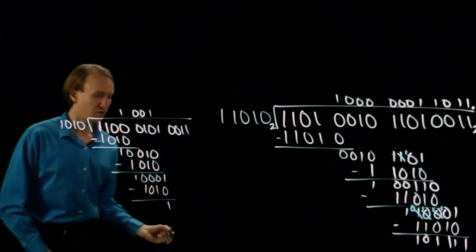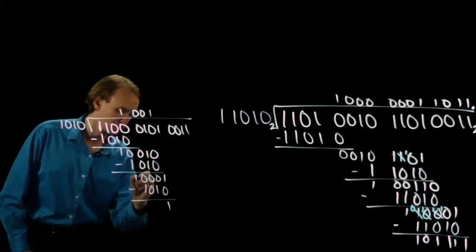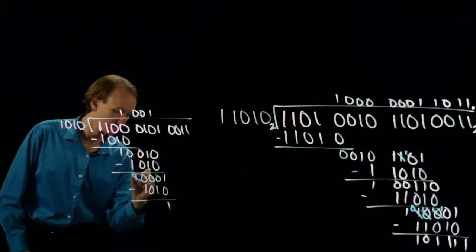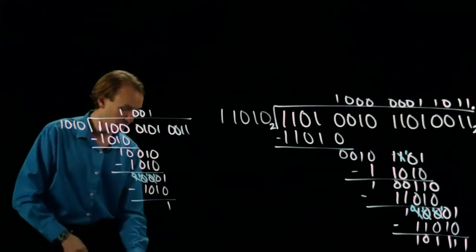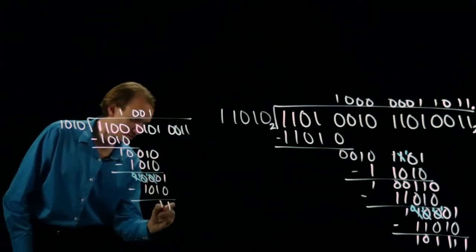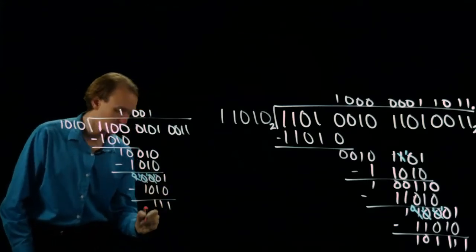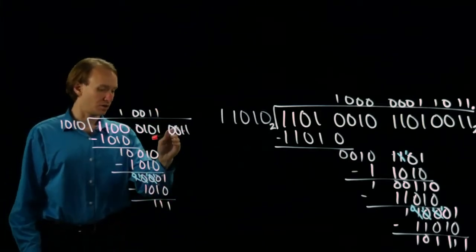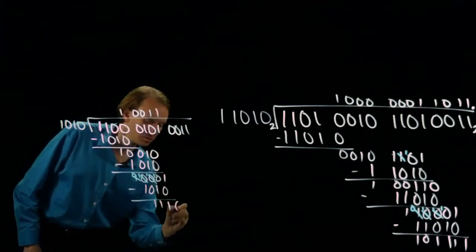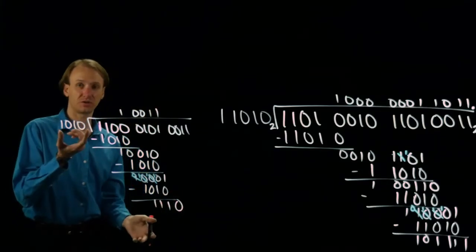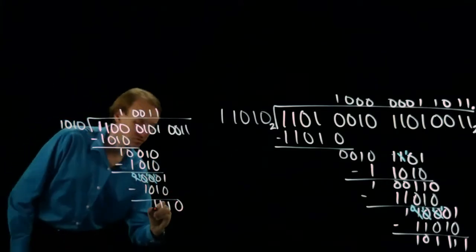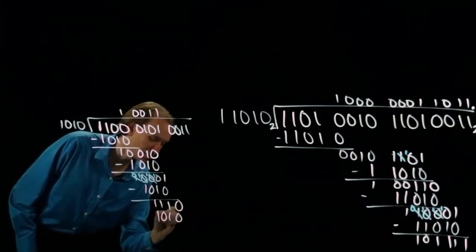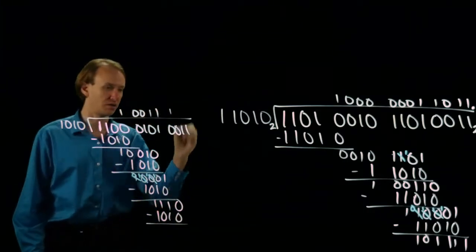And here again, I'll have lots of borrowing to do. Now I can pull down this zero. I've got a four-bit binary number, which is larger than this four-bit binary number. So I'll do my subtraction again and write down a one.